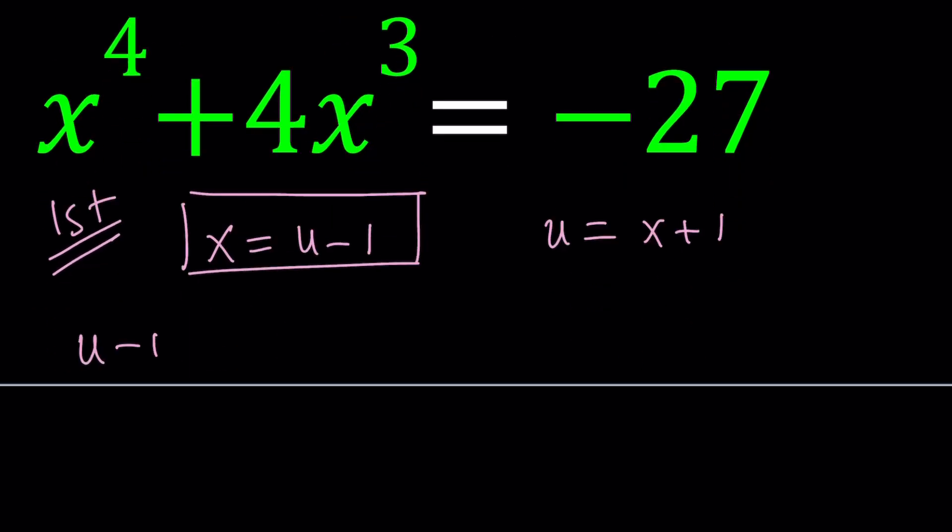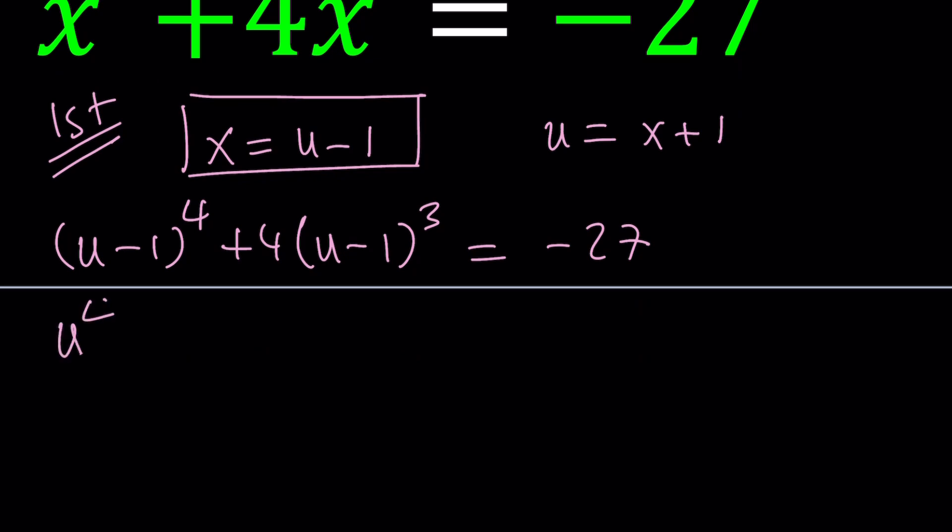When you do that, you're going to get something nicer because u to the third power is going to cancel out. If you expand this, you're going to get u to the fourth minus 4u cubed plus 6u squared minus 4u plus 1, plus 4u cubed minus 12u squared plus 12u minus 4 equals negative 27.